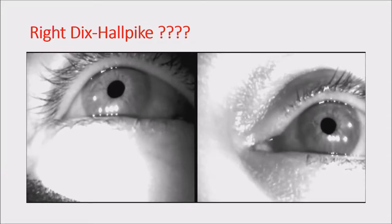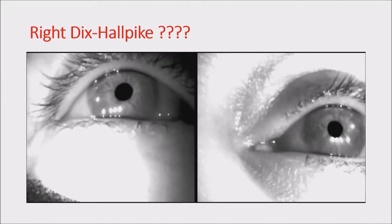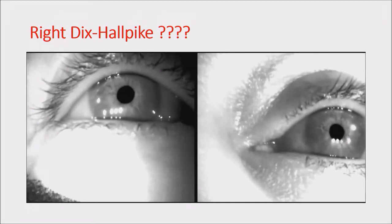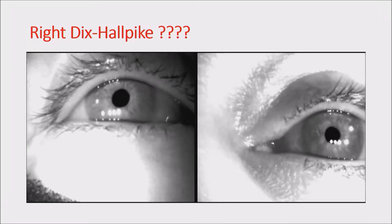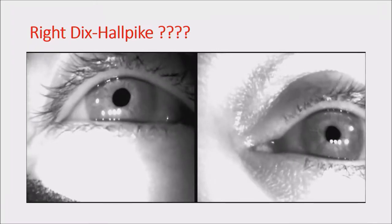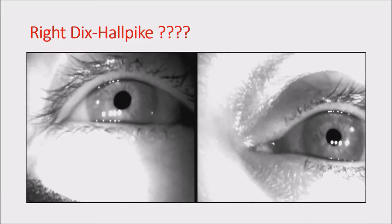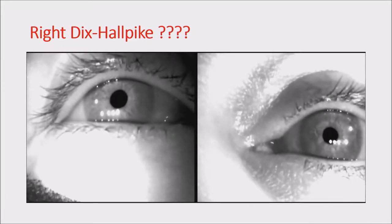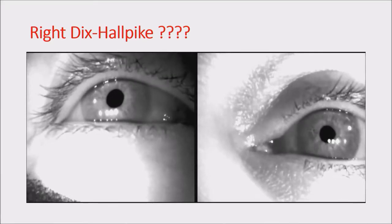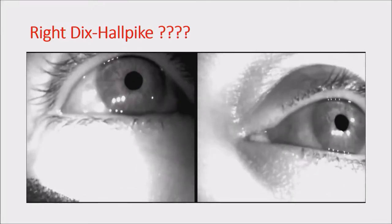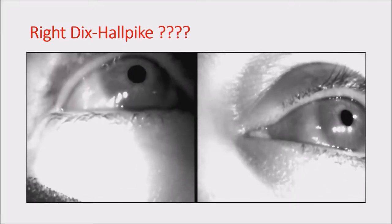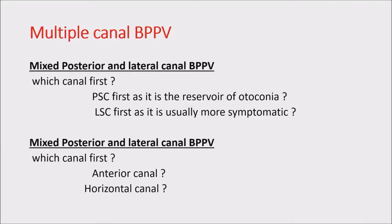An important trick: for horizontal canal BPPV you can always double-check by verifying the reversal of nystagmus on the McClure-Pagnini test. Any strong nystagmus has a rebound in the opposite direction — even in caloric testing, a hyper-excitable caloric response will be followed by a spontaneous reverse-direction nystagmus. This is called rebound nystagmus.